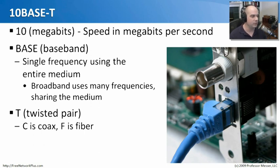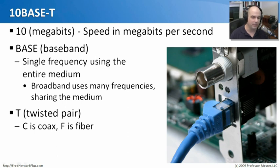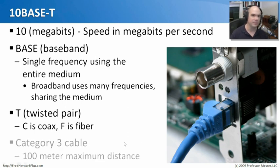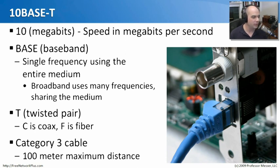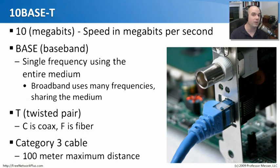The 'T' in 10Base-T stands for twisted pair. Ethernet has run over coax, fiber, and twisted pair — whenever you see a T, you know it's an RJ45 or some other twisted pair connection. 10Base-T used one of the first twisted pair standards, Category 3 cable, which means we could extend ethernet at 10 megabits per second up to 100 meters. If we needed to go farther, we'd need to repeat the signal or put in fiber.